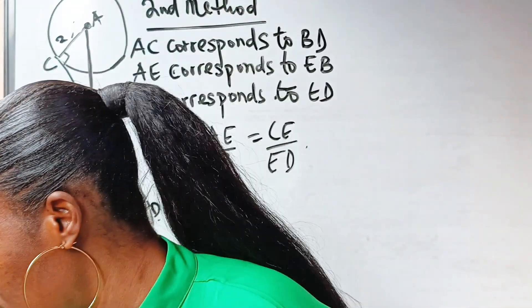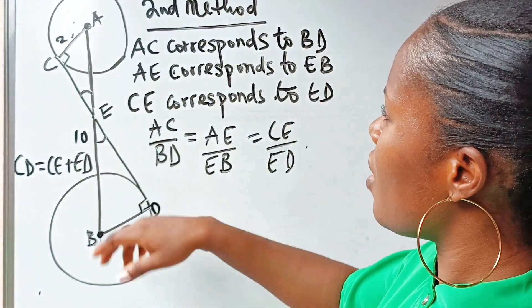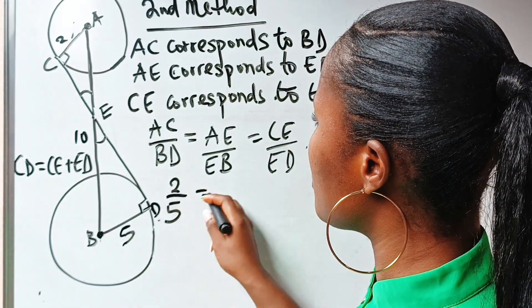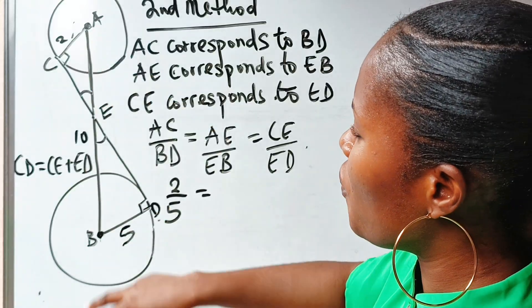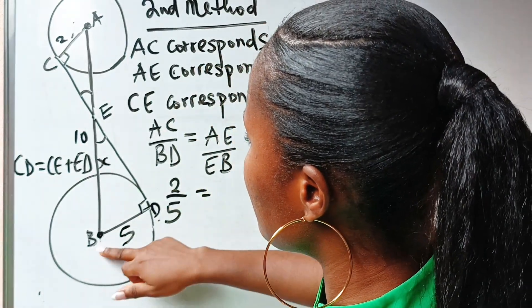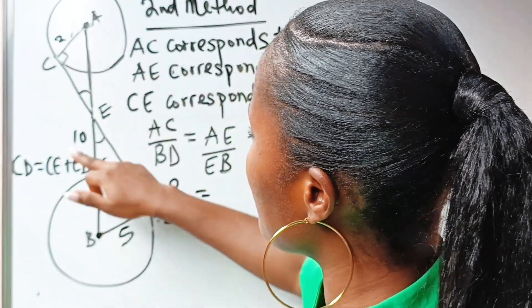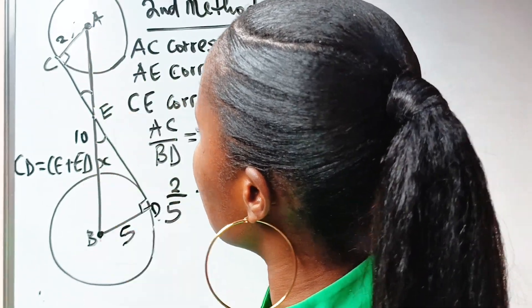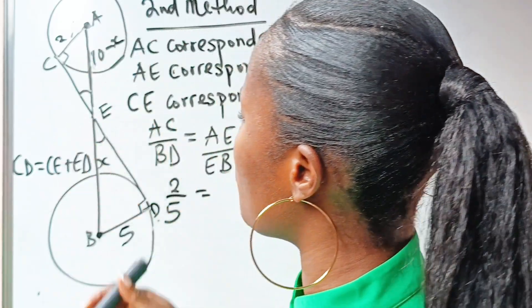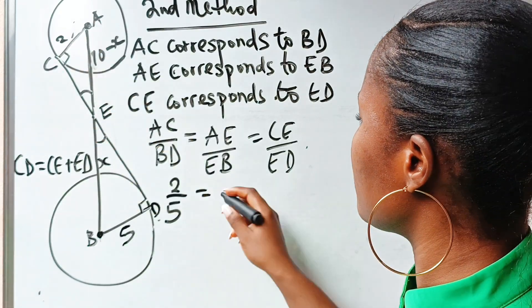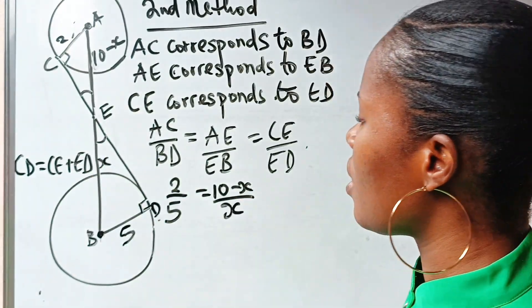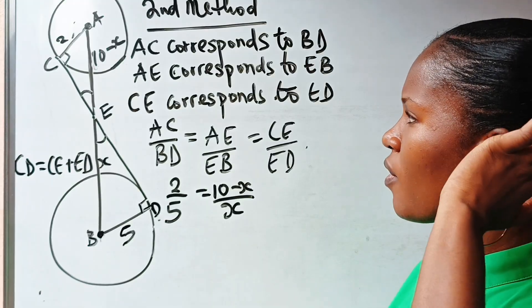Now, AC is 2 and BD is 5. Let EB equal X. Since AB is 10, AE must be 10 minus X. So we write: AC over BD equals AE over EB, which gives us 2 over 5 equals (10 minus X) over X. Let's cross multiply: 5 times (10 minus X) equals 2 times X.